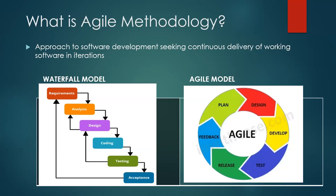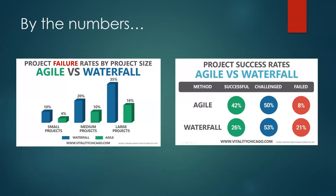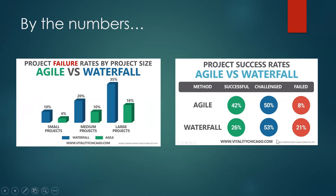Before that, I want to cover Agile and Waterfall by numbers — looking at the failure and success rates of different size projects when we follow Agile or Waterfall. Green depicts Agile, blue is Waterfall. For small projects, the failure rate is 10% for Waterfall whereas it is only 4% for Agile. For medium-sized projects, the failure rate for Waterfall is also higher than Agile. For large projects, the failure rate of Waterfall is much more than Agile. The success rate for Agile is 42% compared to only 26% for Waterfall. Challenges are almost equal for both, but the failure rate is much lesser in Agile.